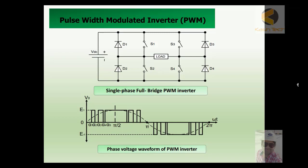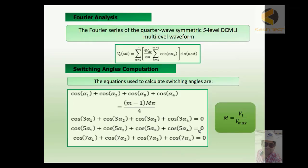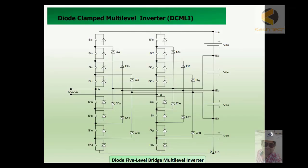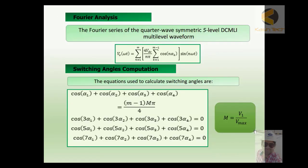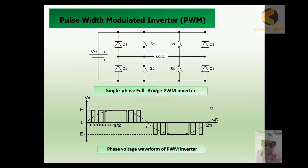This is quite a simple technique. The previous technique we discussed uses a very large number of diodes and is quite expensive. In this technique we are using only 4 diodes, and by using these 4 diodes you can see this is forming a single phase full bridge PWM inverter. Using these switches, the waveform is produced — the phase voltage waveform of the PWM inverter.